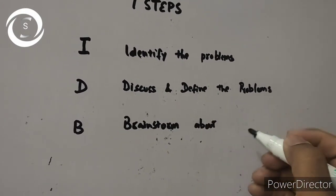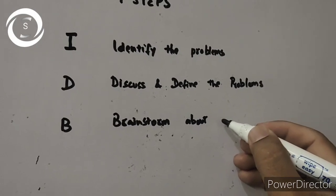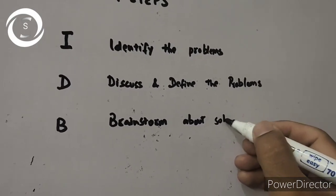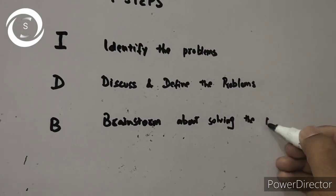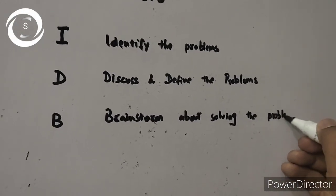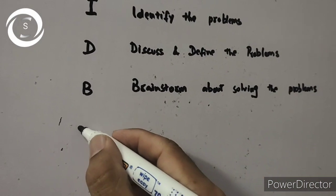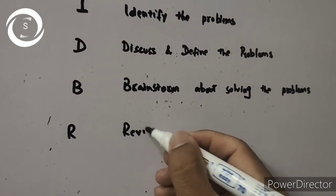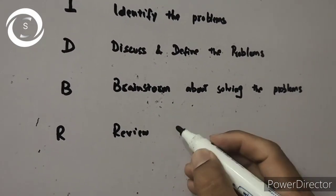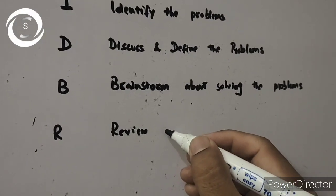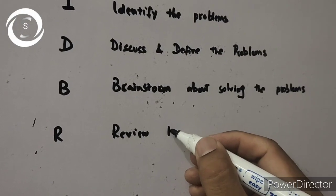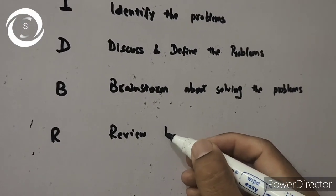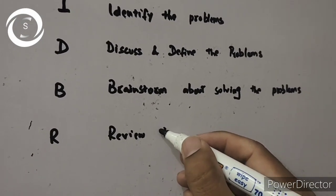Fourth step is R review. Review steps 2 and 3 and arrange explanations into tentative solutions, like confirm whether you have accurately defined the problems and you have performed authentic brainstorming or not.